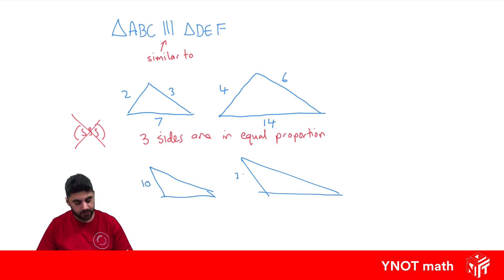Here we have 10 and 20, 4 and 8, and this angle equaling this angle. We have two sides in equal proportion (10 and 20, and 4 and 8), because times 10 by 2 and 4 by 2 gives us corresponding sides in the other figure. The included angle, the angle in the middle of the two sides, is equal. So we say two sides are in equal proportion and the included angle is equal.